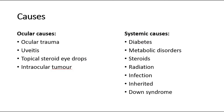What are the causes of cataract? We can divide them into ocular causes, which are local causes, and systemic causes. For ocular causes, there is ocular trauma — for example, penetrating injury or blunt trauma to the eye — uveitis, topical steroid eye drops, and intraocular tumors such as ciliary body tumors, which may physically impinge on the lens causing cataract.